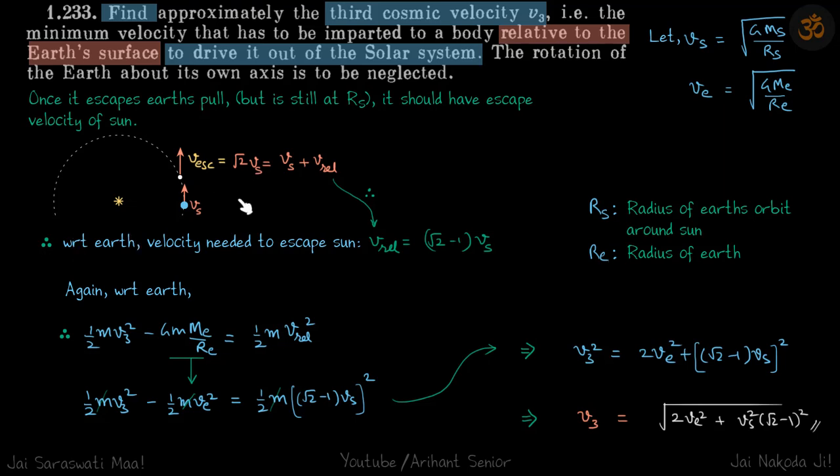So therefore, we can say V relative is root 2 minus 1 times Vs, so root 2 minus 1Vs. So with respect to earth, velocity needed to escape sun is V relative. I should further clarify, that is when it is out of earth's gravity. So with respect to earth, so at this moment, we are watching from the earth, then this particle has a velocity V relative, and that V relative is given by root 2 minus 1Vs.